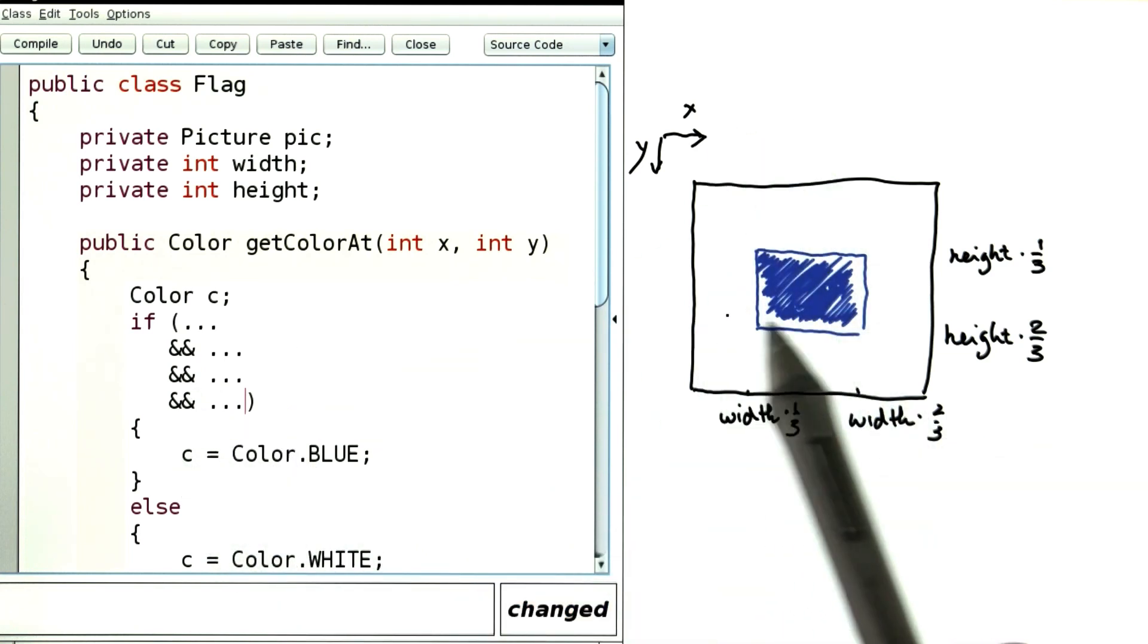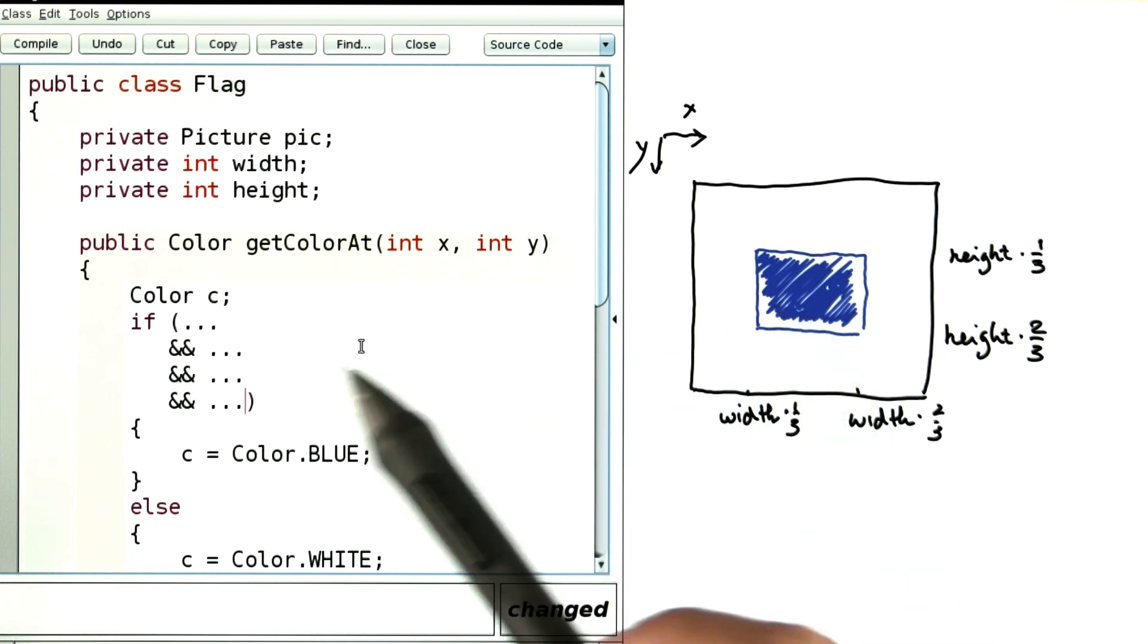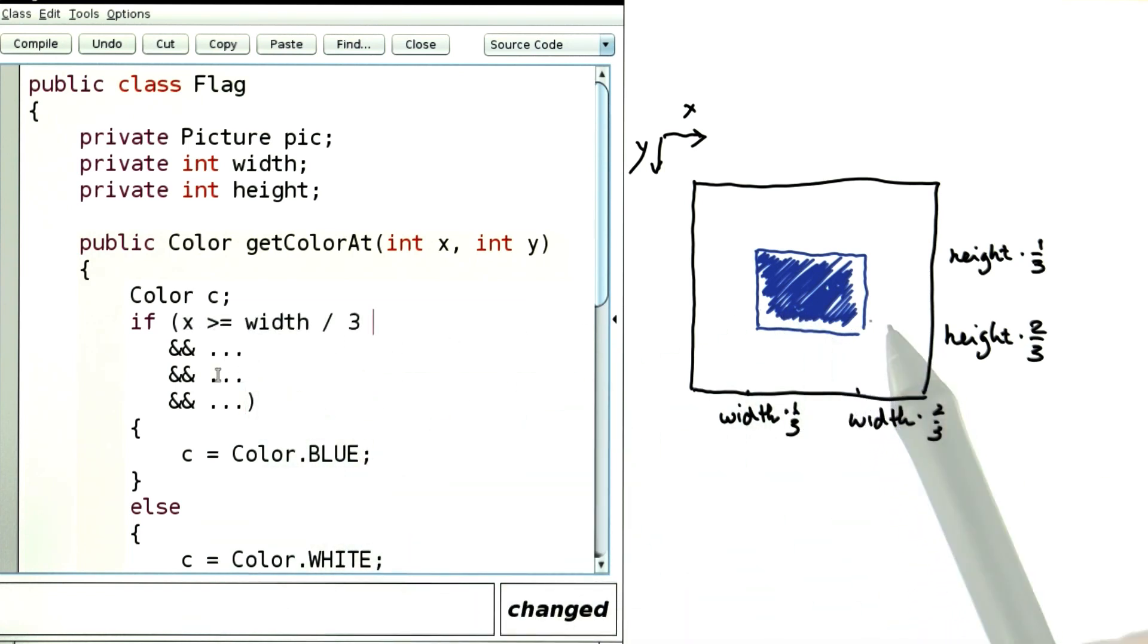Let's start with the x's. X has to be at least width over 3, and it should be at most twice that.